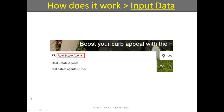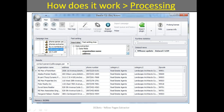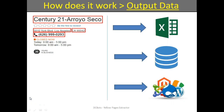You can also set the keyword or business name if it's more appropriate. Then just launch the data extraction process in DCBot software. Finally, you receive contacts and other essential data on companies. Furthermore, we can customize our solution to scrape more data if you need.